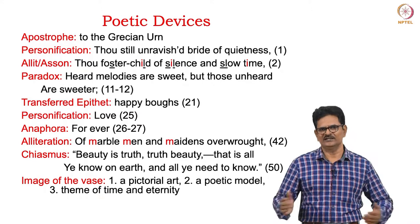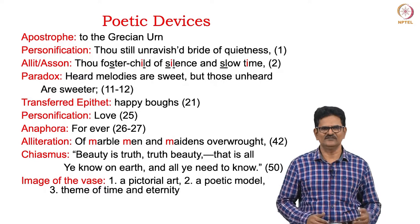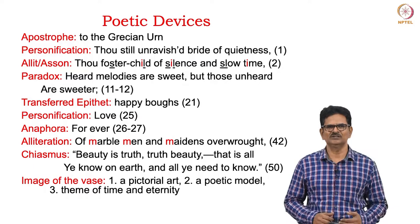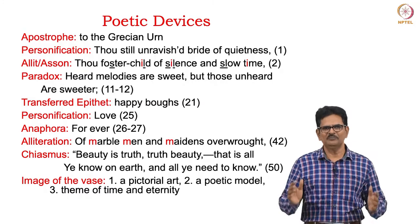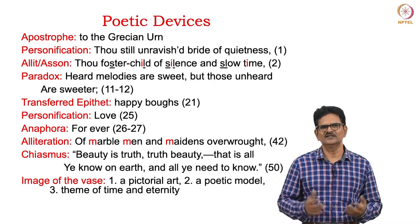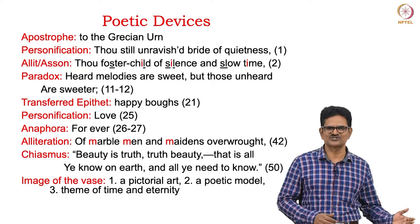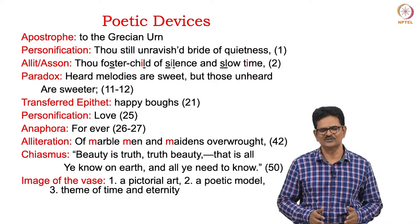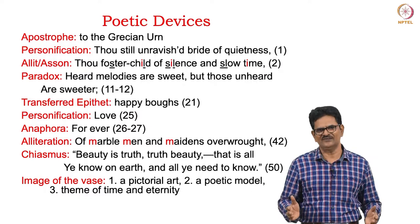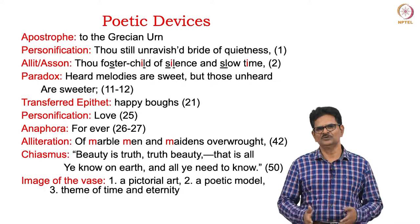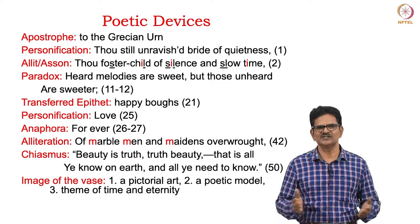We have personification of love in line number twenty-five. Anaphora can be seen in lines twenty-six and twenty-seven, which start with 'for ever, for ever.' We have again alliteration in 'of marble men and maidens overwrought' — marble, men, and maidens together create a beauty in sound. We also have chiasmus in the last two lines: 'Beauty is truth, truth beauty — that's all you know on earth and all you need to know.' Keats's whole life was devoted to this beauty — the beauty of Fanny Braun and his own poetic art represented by this Grecian urn.